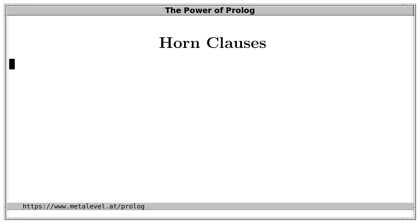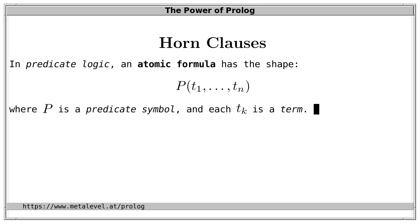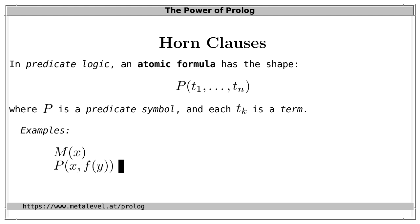Let's take a look at Horn clauses. In predicate logic, an atomic formula has the shape p of t1 and so on up to tn, where p is a predicate symbol and each tk is a term. For example, m of x is an atomic formula, and p of x, f of y is also an atomic formula.